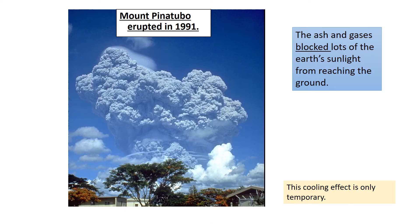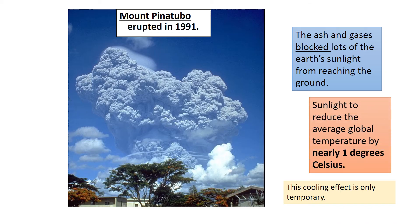Another natural cause of climate change is volcanic eruptions. For example, when Mount Pinatubo erupted in 1991, it produced a huge amount of ash that went up into the atmosphere and blocked sunlight from reaching the ground. This caused a cooling effect — global temperatures for the following year were about one degree Celsius cooler. But once that ash fell back to Earth, the planet warmed up again, so this effect is only temporary.